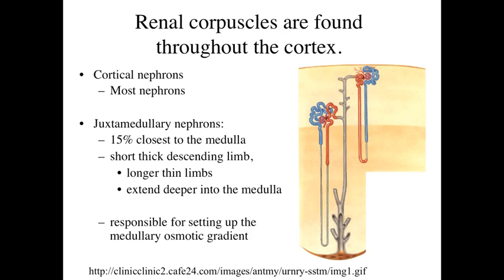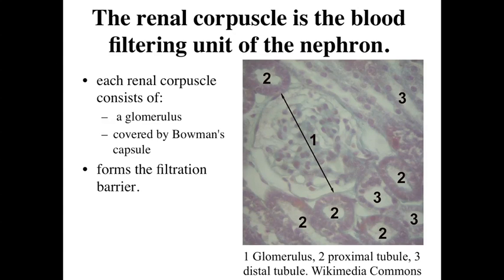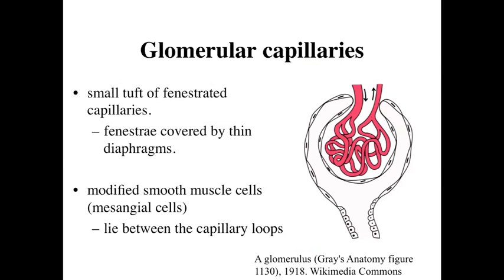The renal corpuscle is the blood filtering unit, composed of the glomerulus - that rich capillary bed covered by Bowman's capsule, an epithelial lining which covers the glomerular capillaries and lines the urinary space. The glomerular capillaries are a tough cluster of fenestrated capillaries - leakier than in other regions of the body, with little pores covered by relatively thin diaphragms. This allows small materials to be squeezed out of the blood supply and into the urinary space.